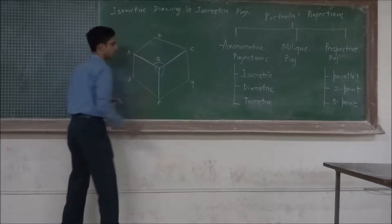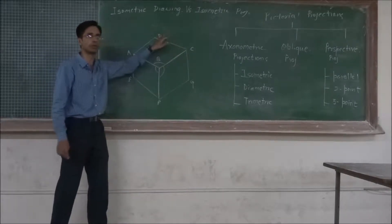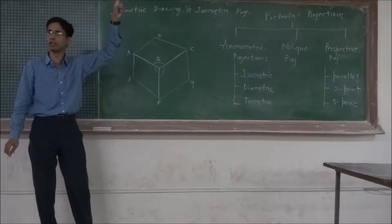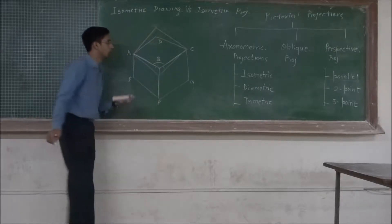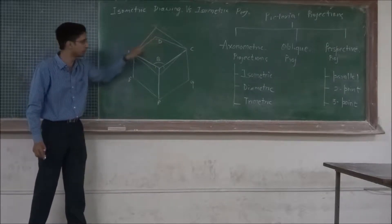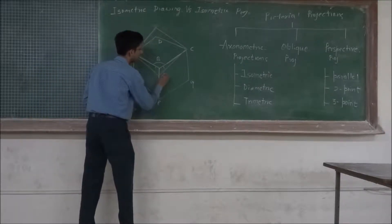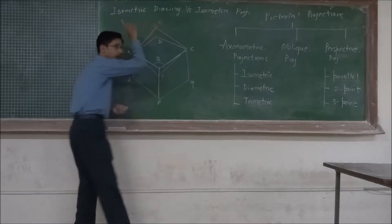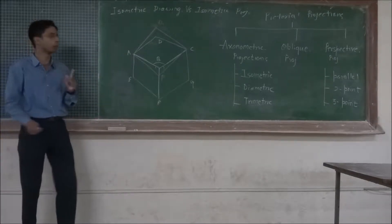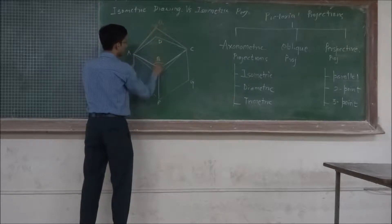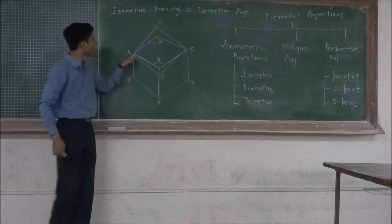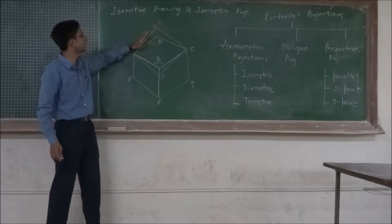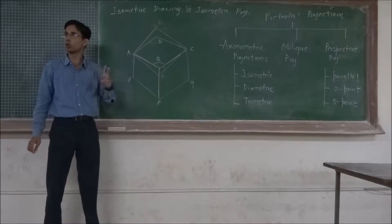The original shape is a square and in isometric it is seen as a rhombus. We will try to find out the relation between the true length and the isometric length. ABCD is the isometric representation — the rhombus — while A, B, C, Q is the original square. We want to find out the relationship between AD and AQ, where AD is the isometric length and AQ is the true length.